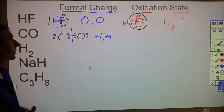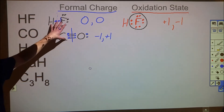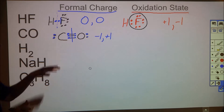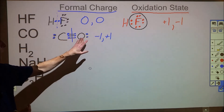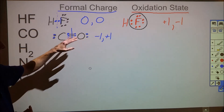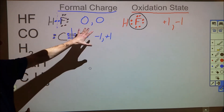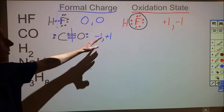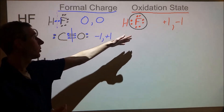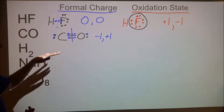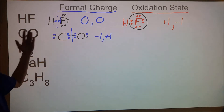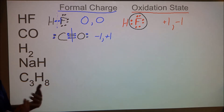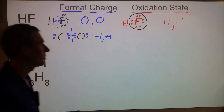Note that as we do these analyses, both formal charges and oxidation states always account for all the electrons in the molecule. If it's a neutral molecule, the total of all formal charges will be zero, as will the total of all oxidation states. If the molecule has an overall charge, the formal charges and oxidation states will add up to that charge.